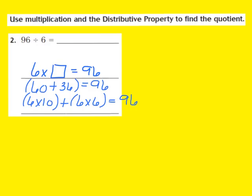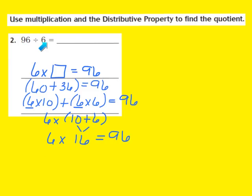Now I'm going to rewrite this by taking the 6 outside the parentheses: 6 times (10 + 6). Adding 10 plus 6 gives me 16. So I have 6 times 16 equals 96. And if I know that 6 times 16 equals 96, I now know that 96 divided by 6 equals 16. I've found the quotient using both multiplication and the distributive property.